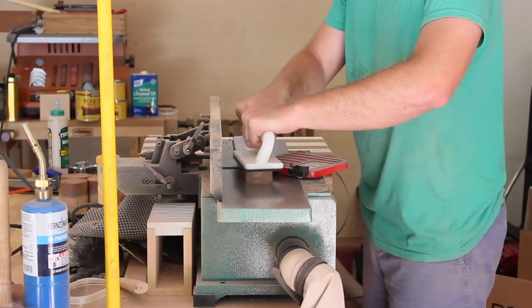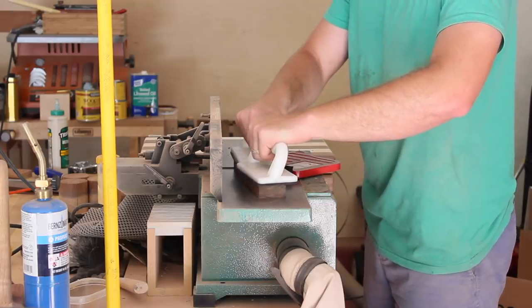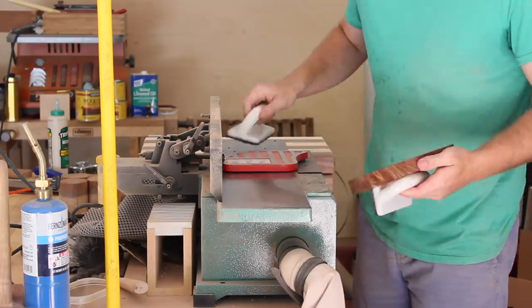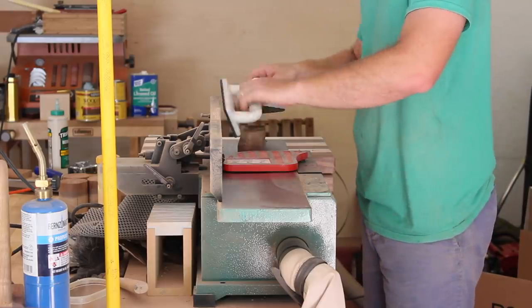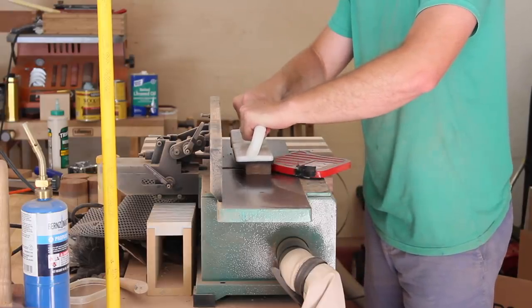Like a lot of the exotics, this cocobolo is really dense and really hard, so I was taking very light passes at the jointer, making sure I wasn't getting too much tear out. After that, I took it to the planer to get it down to its final thickness.